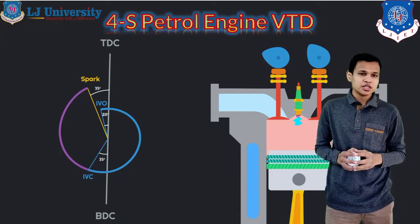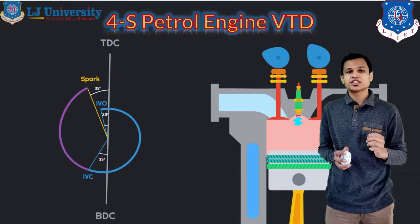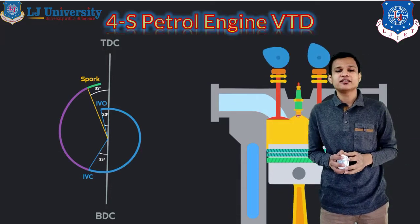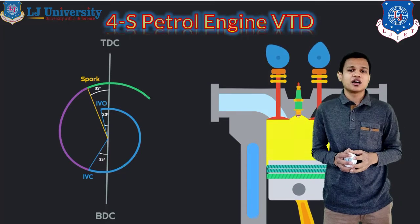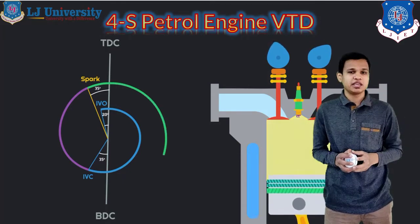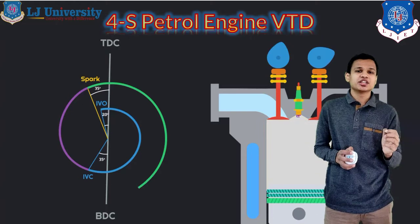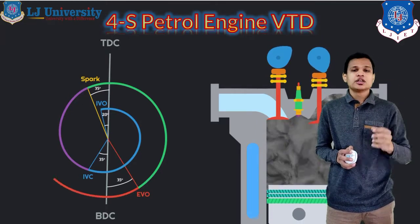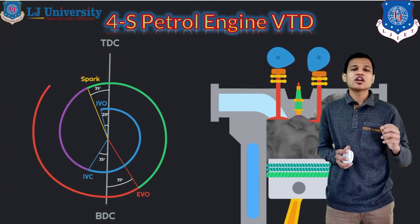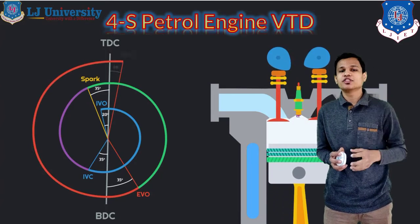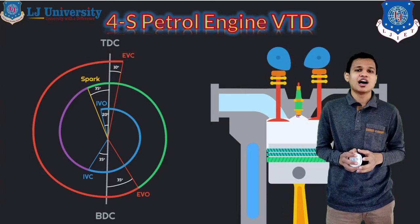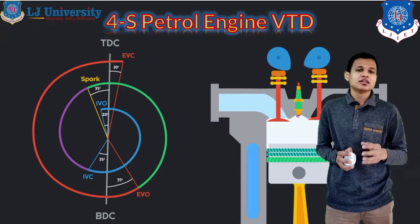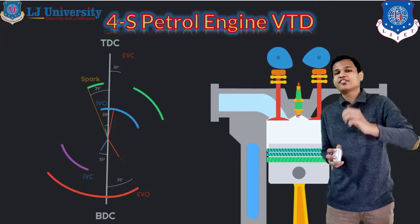After that, the compression stroke will be done, shown with the purple curve. During the compression stroke, before 35 degrees of the TDC, the spark will occur — meaning the ignition will be given. After the ignition, the green curve shows the power stroke. During the power stroke, before 35 degrees of the BDC, the exhaust valve will open.